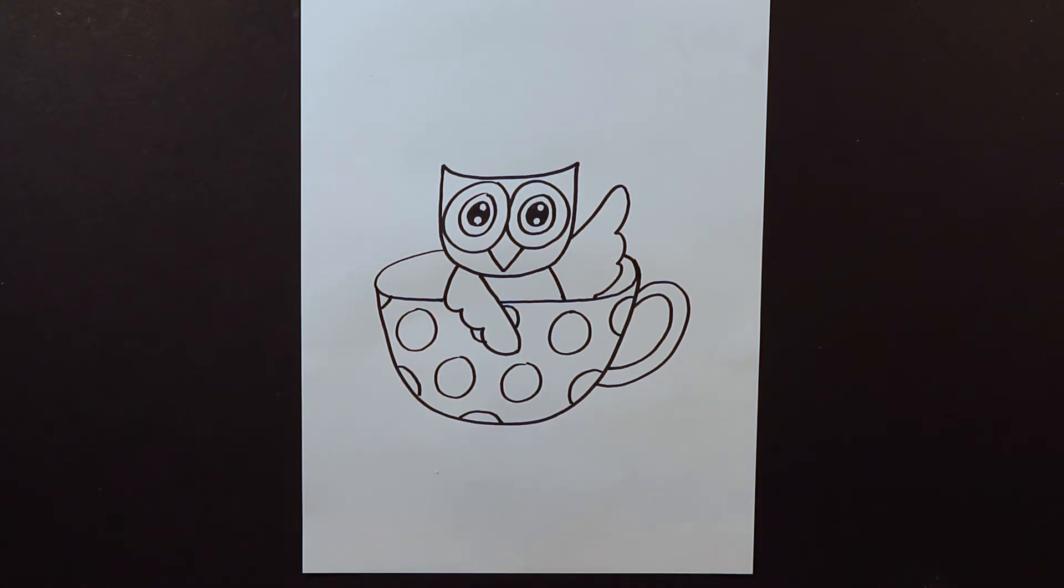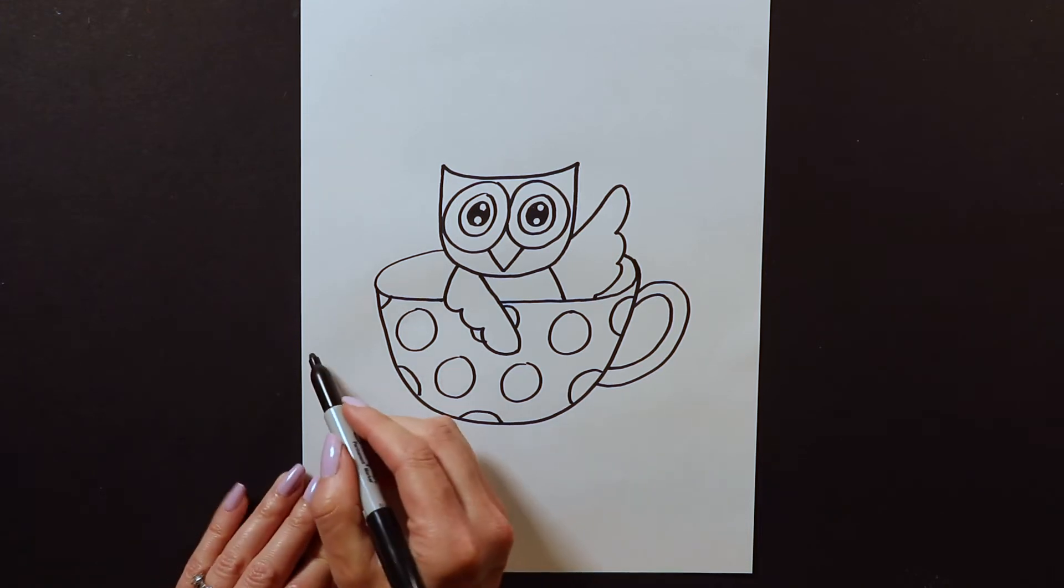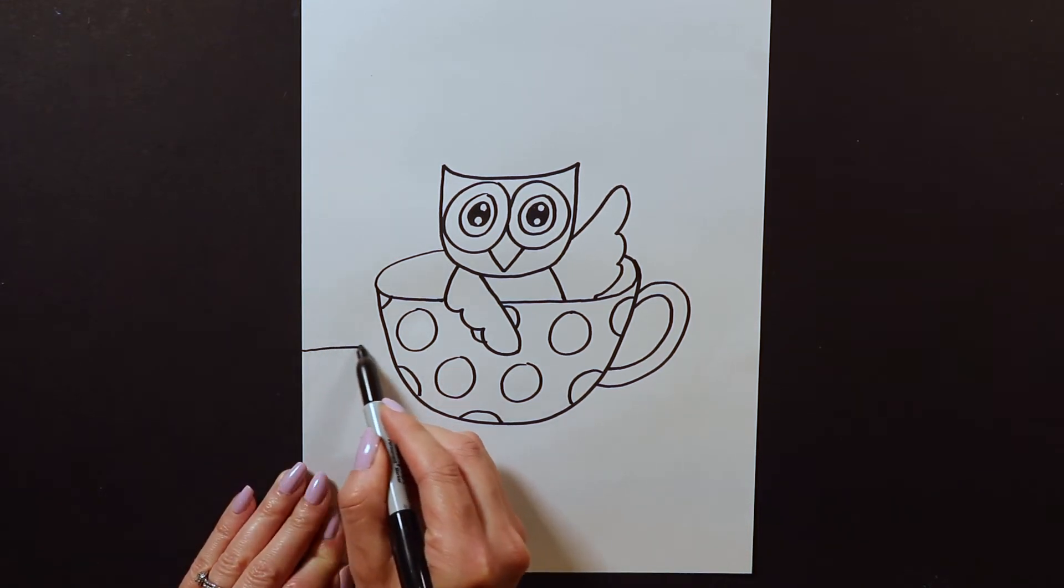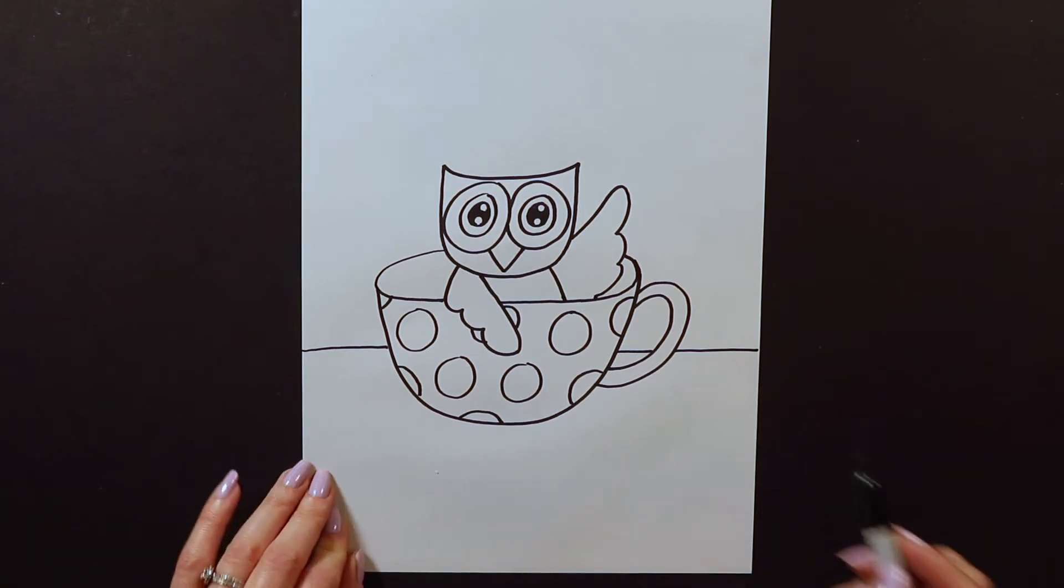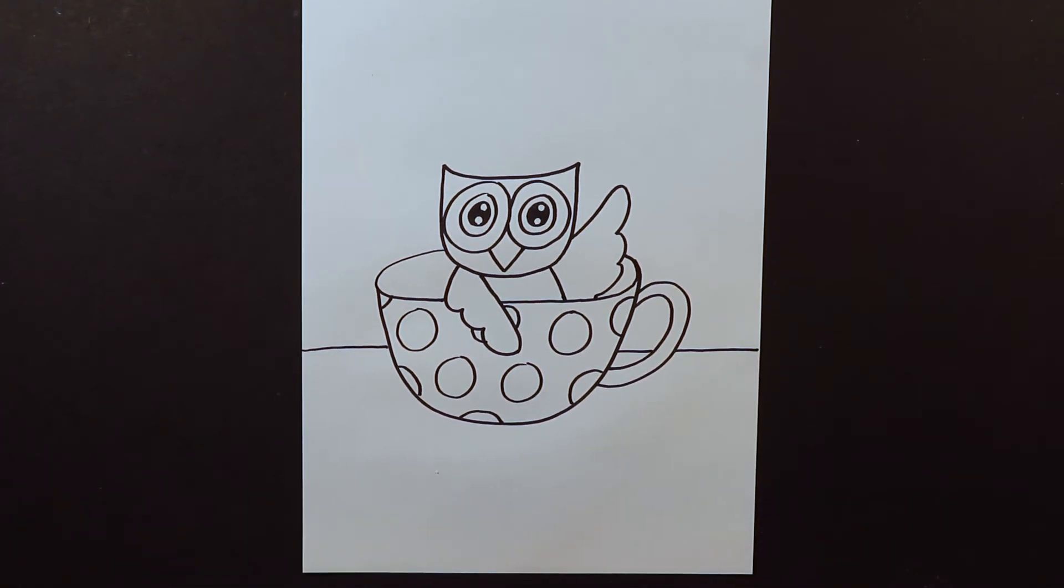The last thing we have to do before we start coloring is we've got to put our teacup on a table like this. That way our teacup's not falling. It's sitting on a table. Now we're ready for coloring.